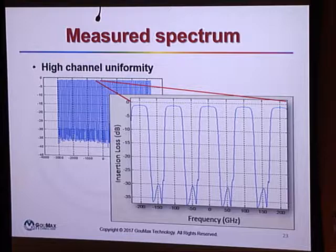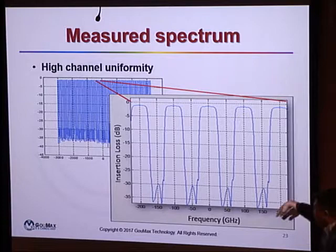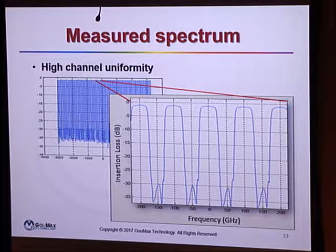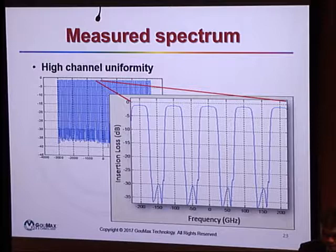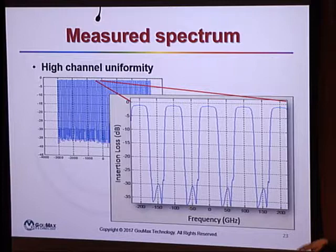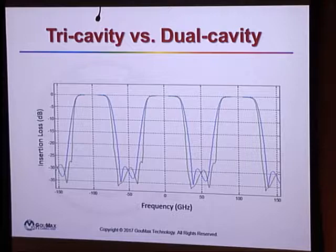This is measured spectrum data from the real device. It closely matches the modeling: very uniform insertion loss, very flat passband top, and very good isolation of about 30 dB — meaning only 0.1% of light leaks through. The device was measured at different temperatures and all perform very well. This device has already been deployed — I believe more than 100,000 units are in the field, and almost every fiber link has this kind of device to enhance capacity.